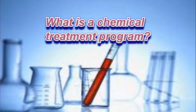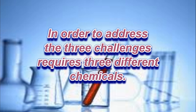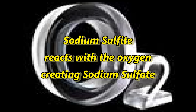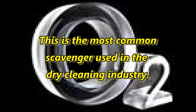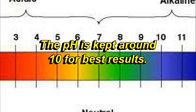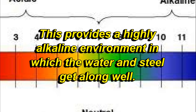What is a chemical program? In order to address the three challenges, three different chemicals are required. Controlling oxygen requires an oxygen scavenger. Sodium sulfide is an inexpensive chemical that reacts with oxygen to create sodium sulfate — this is the most common oxygen scavenger used in the dry cleaning industry. Raising the pH is accomplished with sodium hydroxide, with the goal of keeping the pH around 10. This highly alkaline environment allows water and steel to exist together without corrosion.